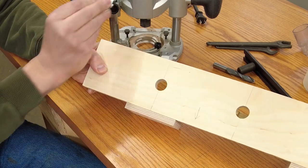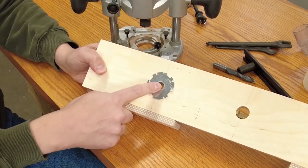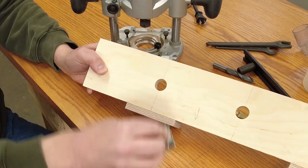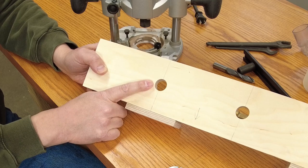And so what will happen is when I plunge this in there and I run it around clockwise a few times I'll end up with perfectly sized three quarter inch bench dog holes.